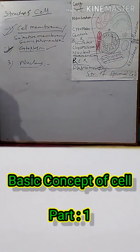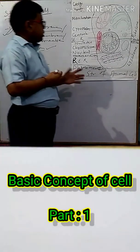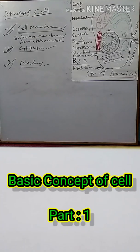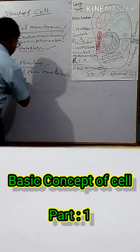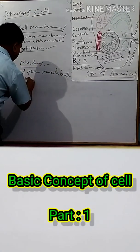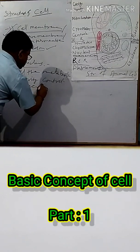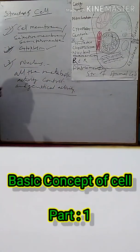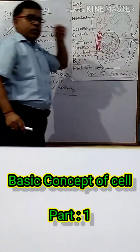Number three: nucleus. The nucleus is the largest and most important part of the cell. Its main function is to control all metabolic activity and genetical activity. That means all metabolic and genetical activities are controlled by the nucleus.